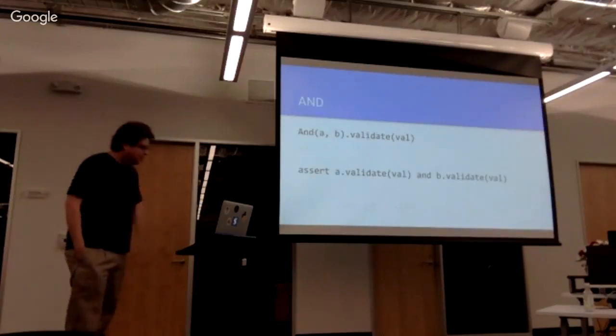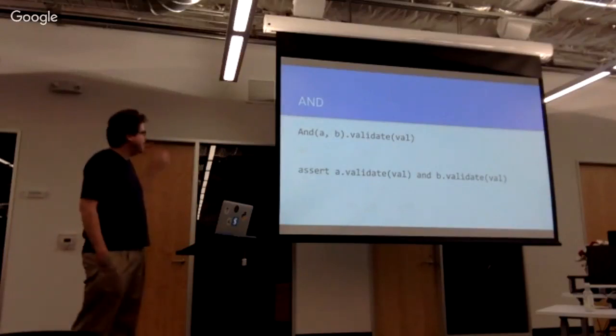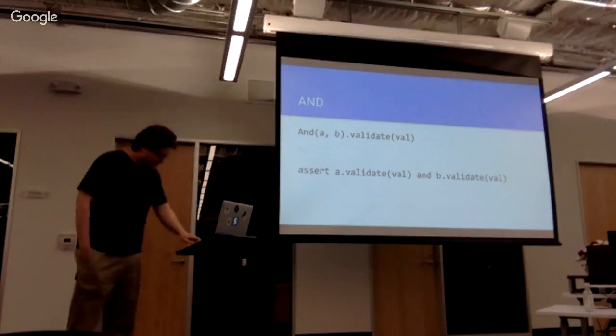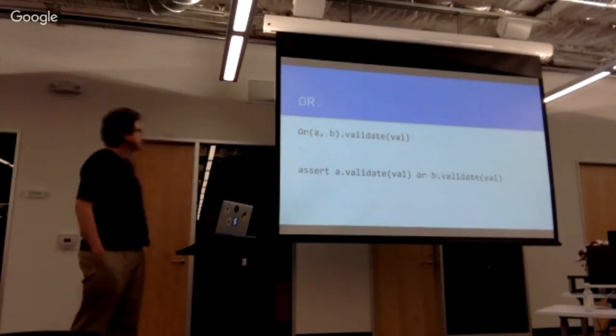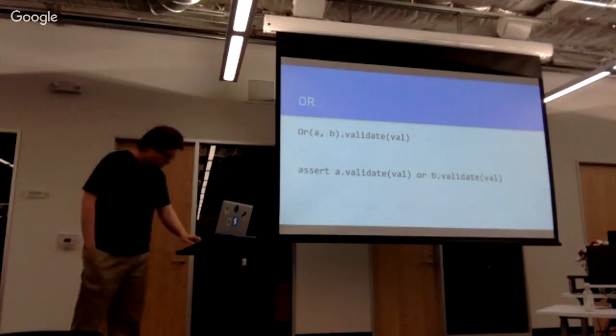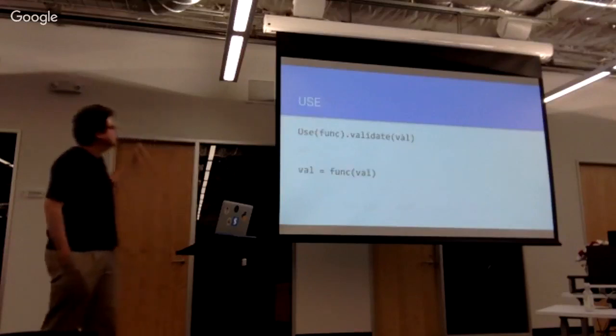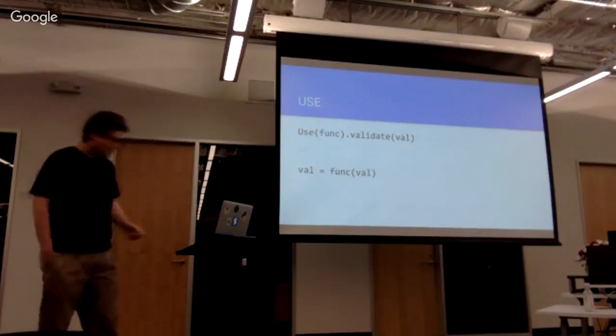There's a couple other utility things. There's an And conjunction, which is you can take two schemas and apply both of them to the same data. There's an Or, you can apply either. And there's Use, which lets you transform a value as it's being validated.